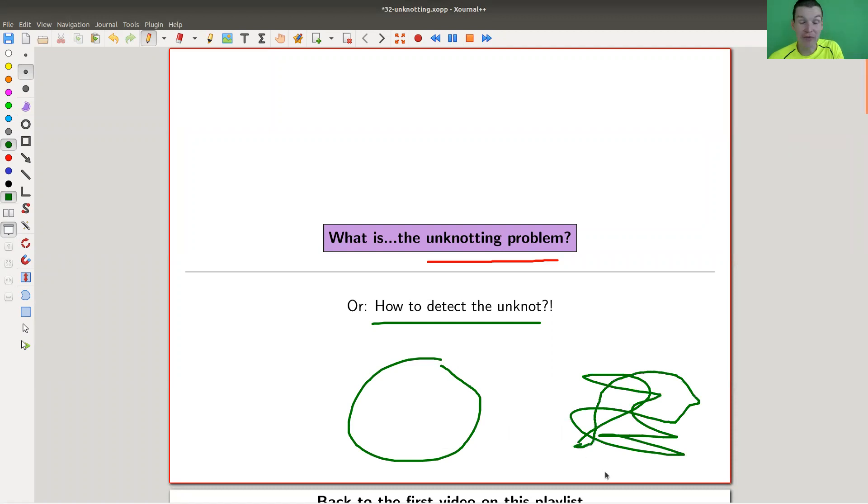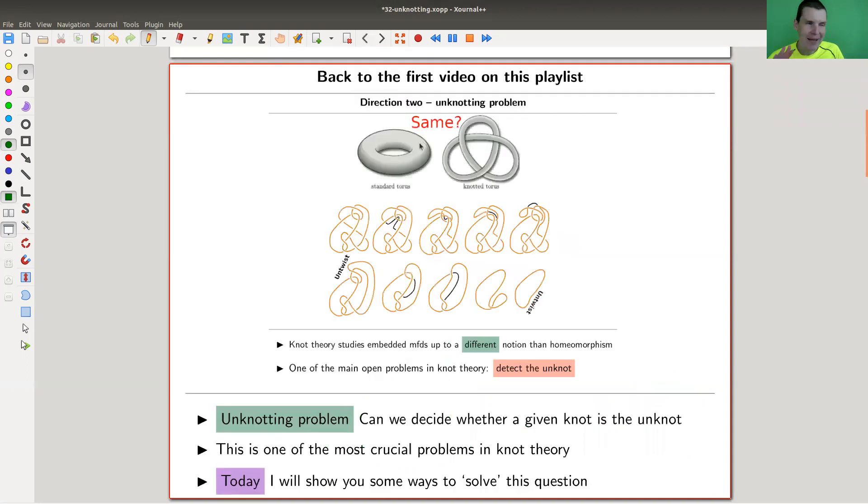This is a really bad knotty picture, but let's assume I would have drawn the crossings correctly, kind of a very complicated knot picture. Can we tell whether it's the unknot or not? That's the unknotting problem.